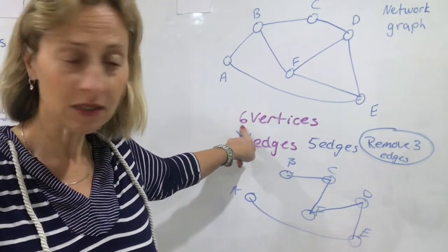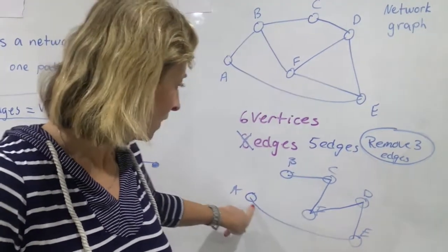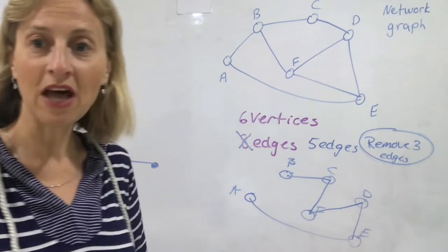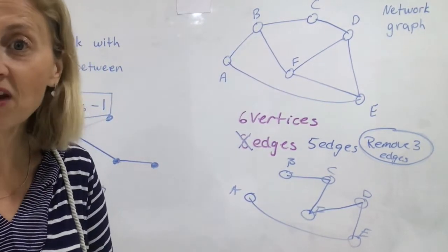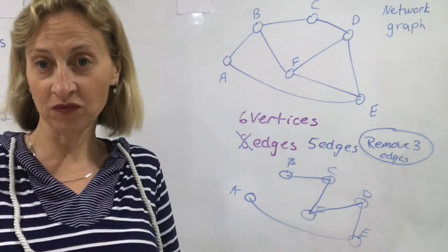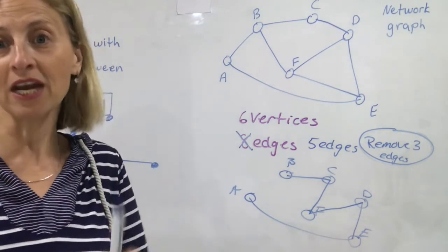And that would be correct, as long as it follows the rules of one less edge than vertices. So you should have six vertices, five edges, and every one of these vertices should be connected to another vertex. You should not have an isolated vertex. You remember what an isolated vertex was? We did it in the first video. It was just a vertex sitting on its own, not connected to anything.